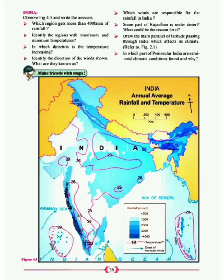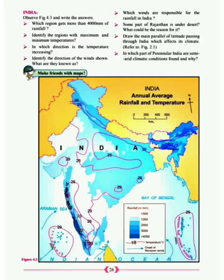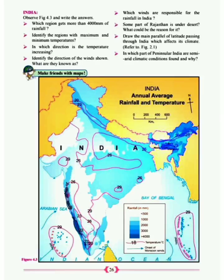They are also asking: identify the regions with maximum and minimum temperature. If you see the map carefully, the temperatures given include values like 26, 29, 20, and 23. You have to write the maximum and minimum temperature. The largest value is 29. Where is 29 located? It is near the Bay of Bengal, so that would be the south eastern part of India.